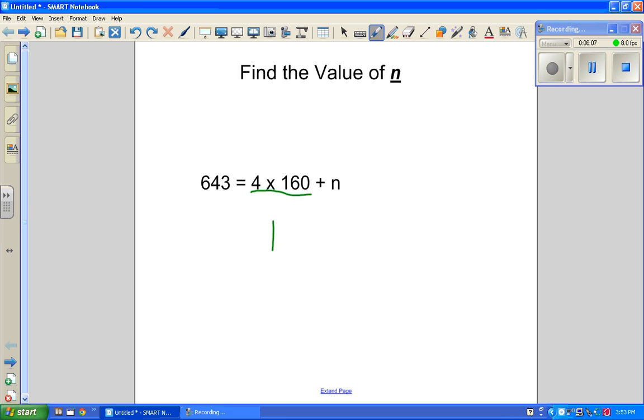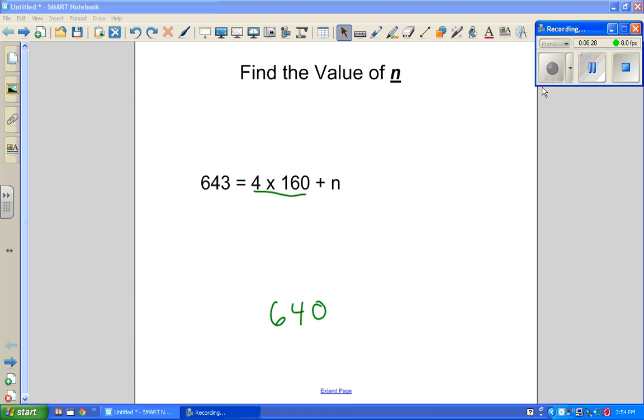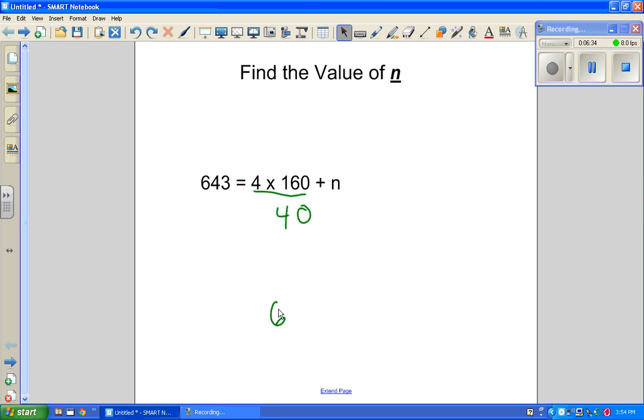I can solve that part. So the first thing I'm going to do is do 160 multiply it by 4. 4 times 0 is 0. 6 times 4, 24. And 4 times 1 is 4, plus the 2 is 6. 640. Since this is the part that I was working on, I'm going to take this 640 and replace it with that.